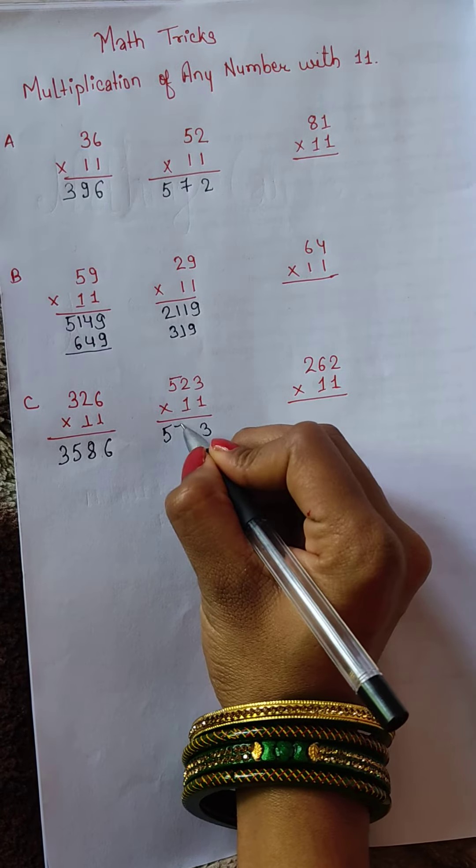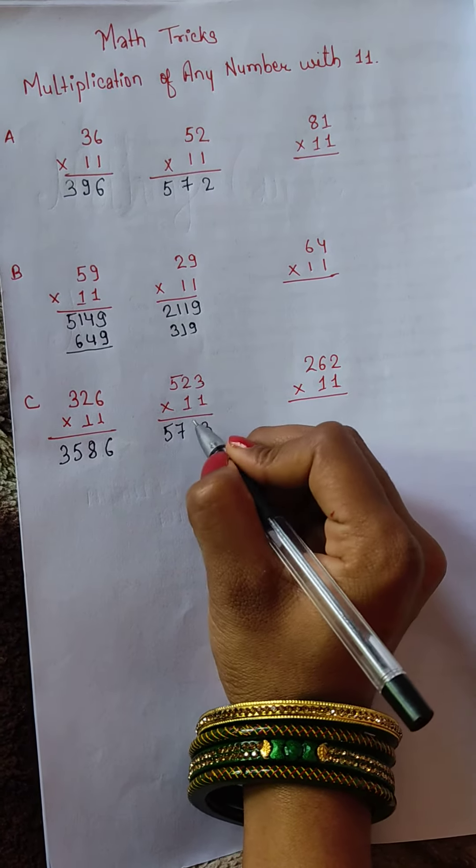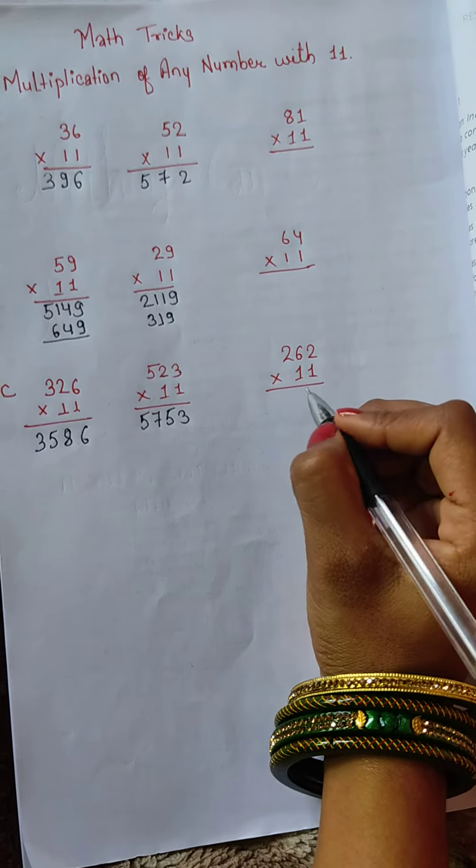Again, 523. What will we do? 5 plus 2 equals 7 and 2 plus 3 equals 5. This is the final answer: 5753. Try to find out the answer of this question by yourself and comment.